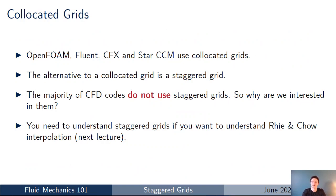All of the mainstream CFD codes you'll be used to nowadays — OpenFOAM, Fluent, Star-CCM — use co-located grids. So internally, the CFD code is calculating and solving pressure, velocity, temperature and all other variables at the centroids of the cells of the mesh you provide.